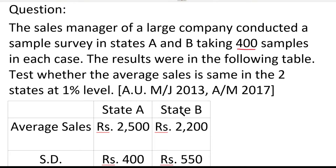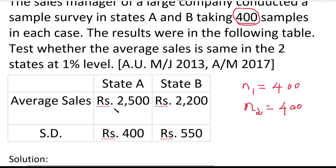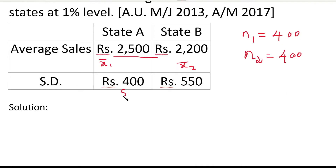Now let's compare mu1 and mu2 — this is the difference of means in a large sample. If the sample size is 30 or greater, it is a large sample. The sample size here is 400, so this is a large sample. To summarize the given values: n1 = 400, n2 = 400, x1 bar = 2,500, x2 bar = 2,200, S1 = 400, and S2 = 550.